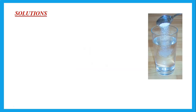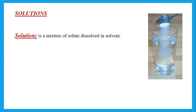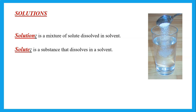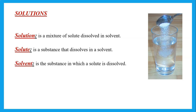For example, solutions are mixtures. If I dissolve sugar in water or salt in water, that's a solution and it's a mixture. When we dissolve a solid in a liquid, the solid is called the solute and the liquid is called the solvent. A solution is a mixture of solute dissolved in solvent. Sugar or salt would be my solute, and the water in this case is the solvent.